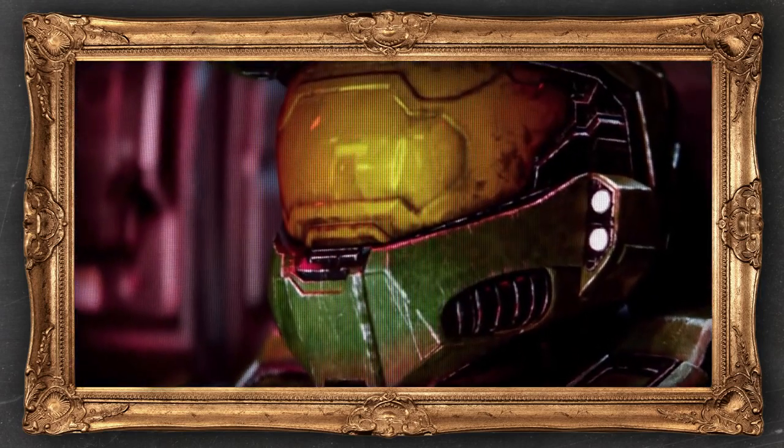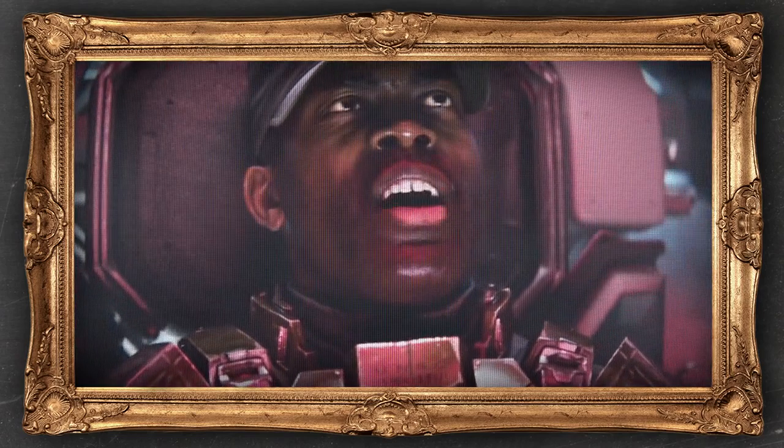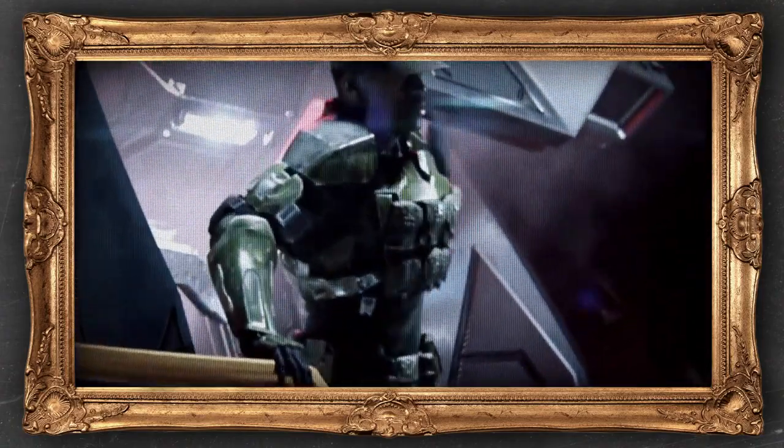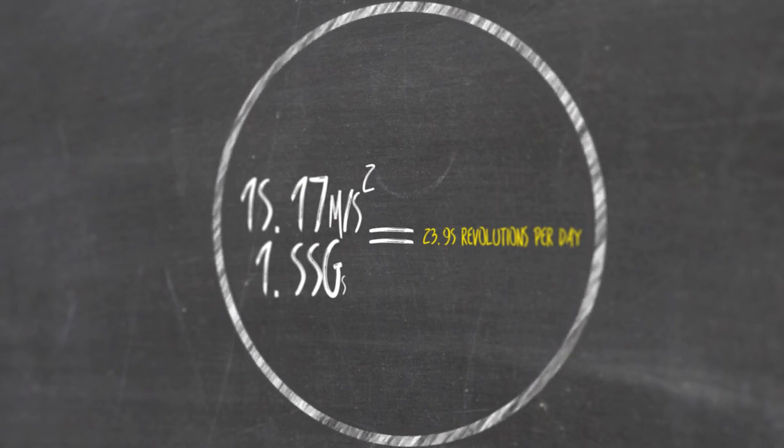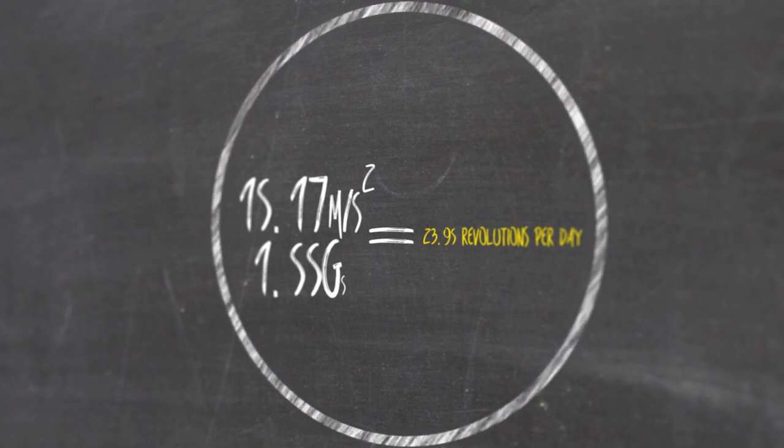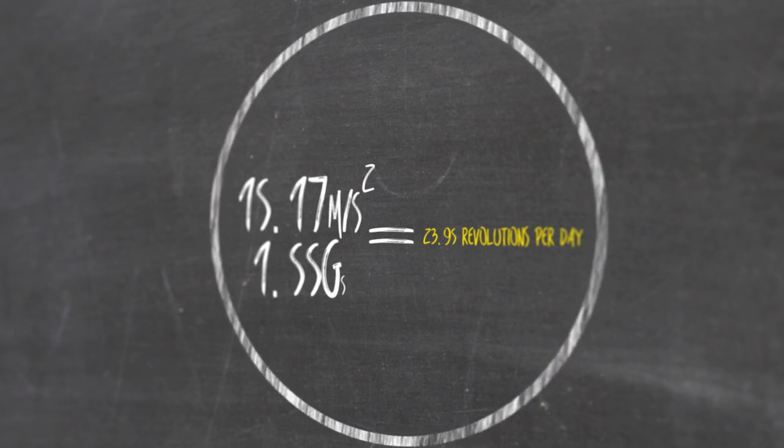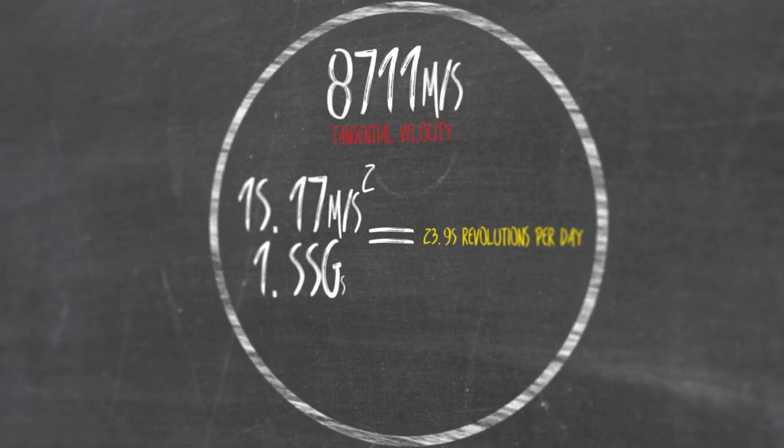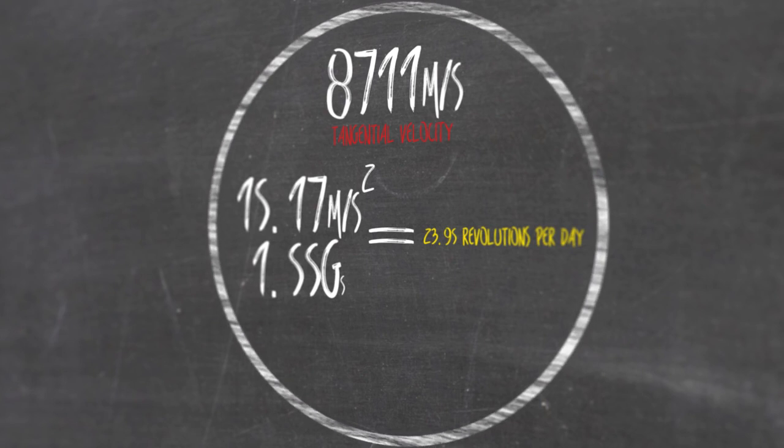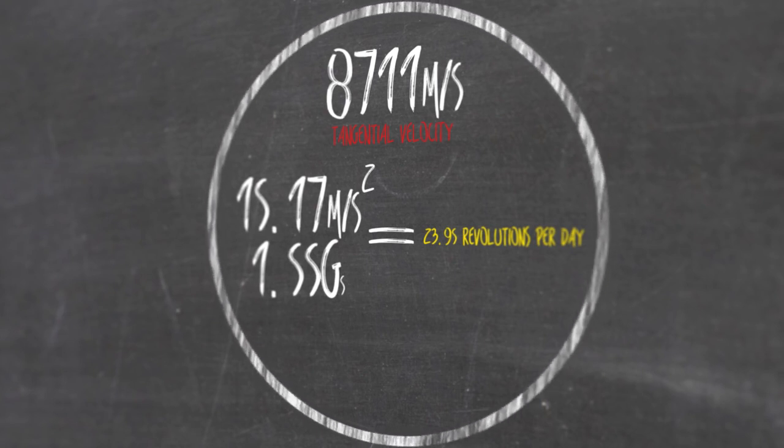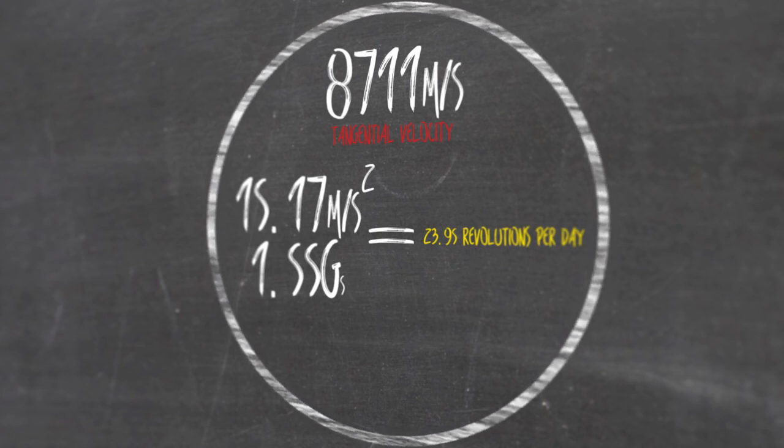The good thing about Halo rings is, the larger your ring, the less noticeable the negative drawbacks of tangential acceleration gravity you experience, but they never, ever fully go away. In order to pull 1.5 G's, our ring has to rotate slightly slower than one rotation per hour. 23.95 rotations per day. And while this seems really slow, your tangential velocity is absurdly fast. 8,711 meters per second, or over 19,000 miles per hour. This isn't a huge deal if you're already on the ring, but it makes actually getting on the ring next to impossible.